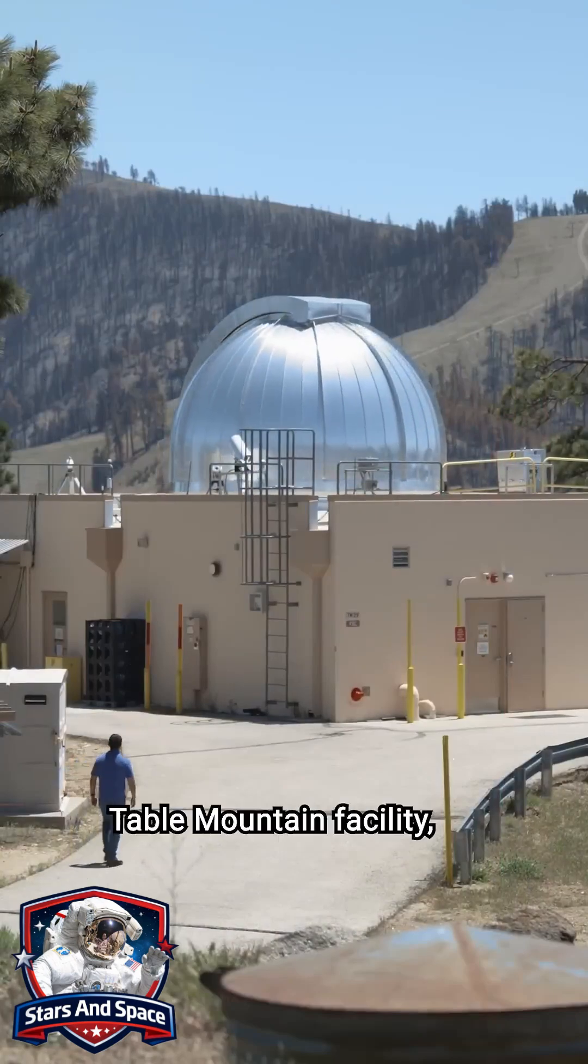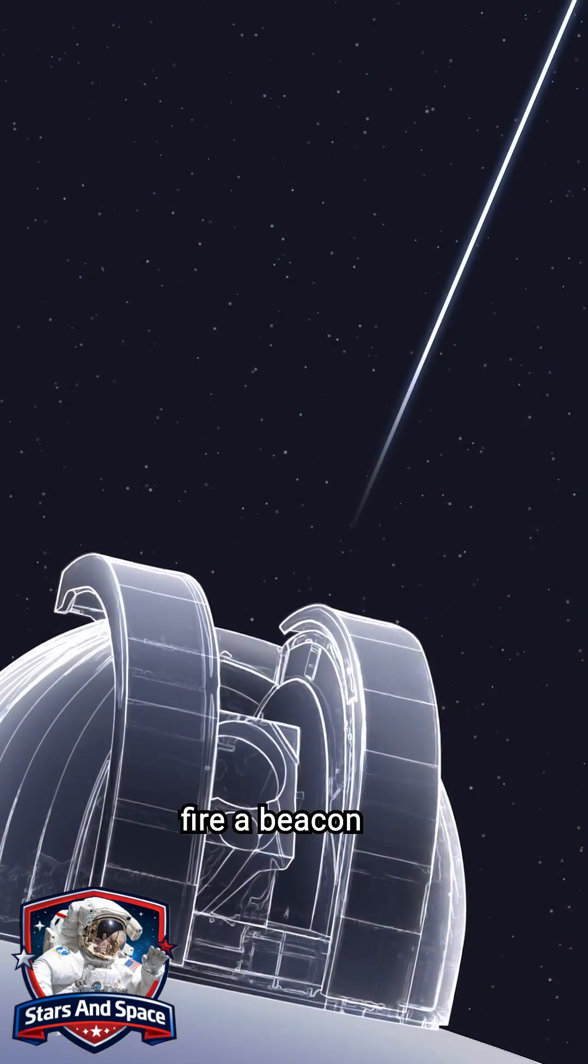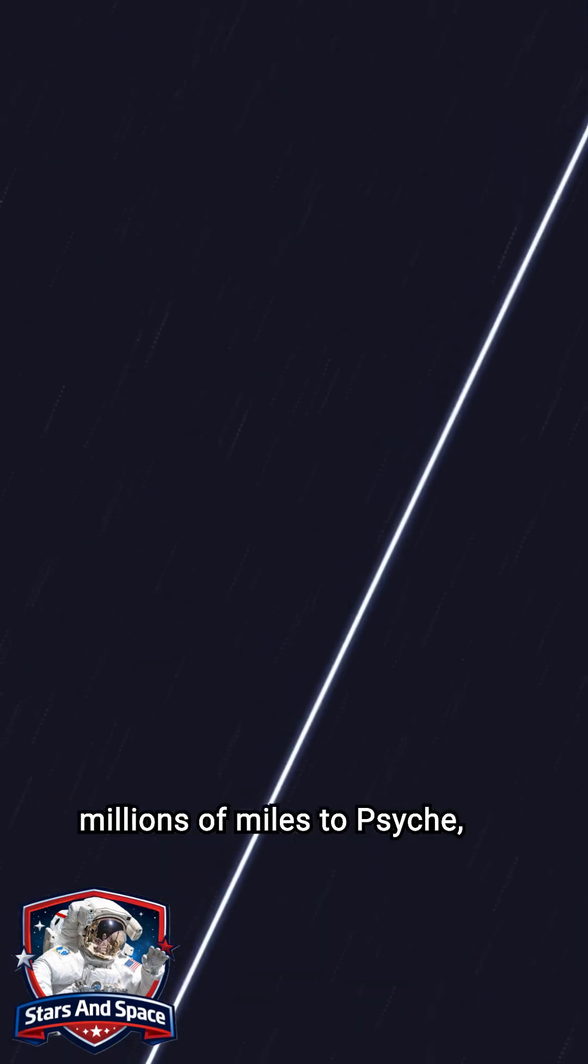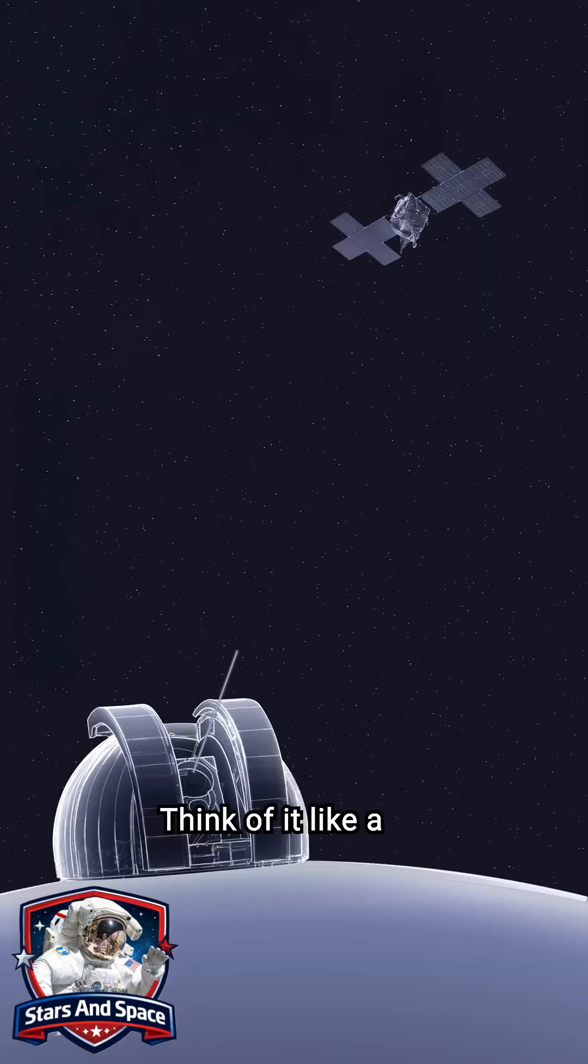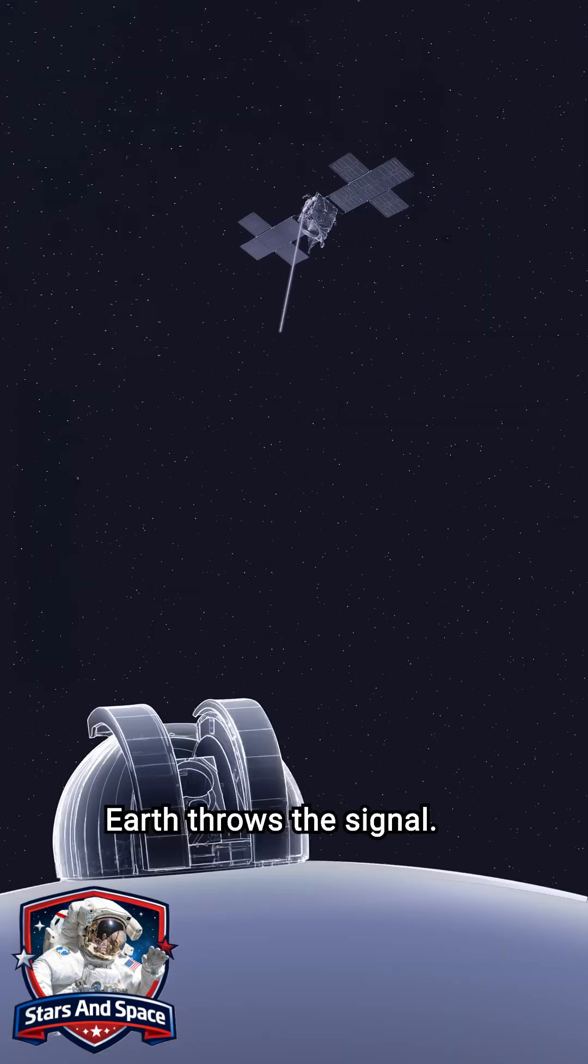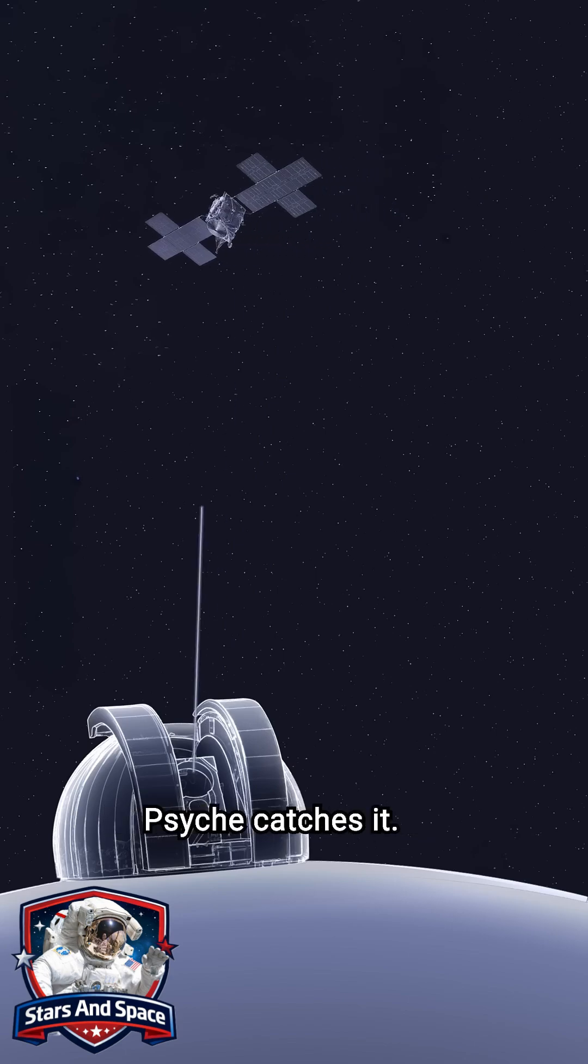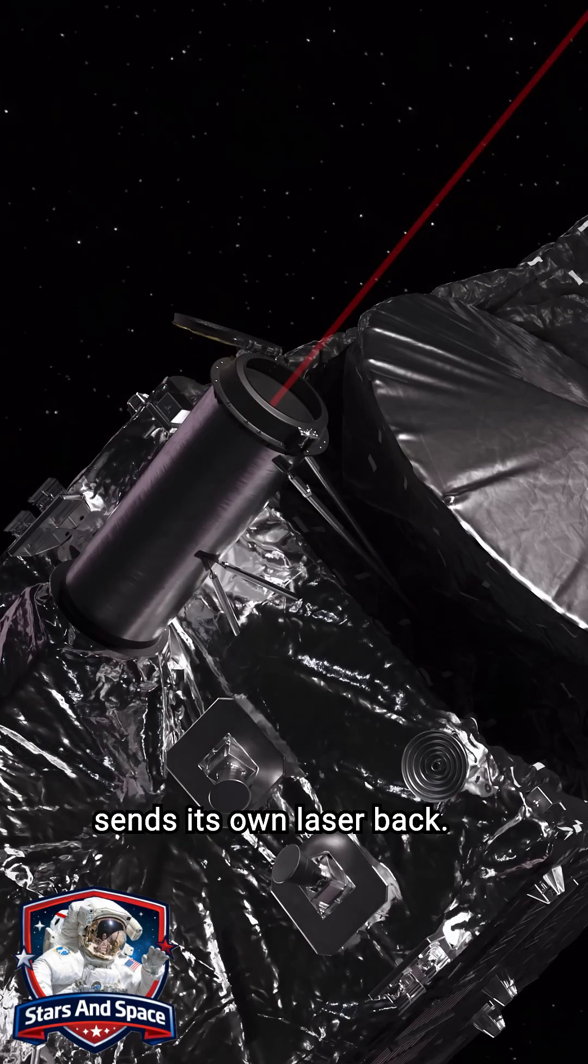At JPL's Table Mountain facility, 10 infrared lasers fire a beacon millions of miles to Psyche, which carries DSOC's flight transceiver. Think of it like a cosmic game of catch. Earth throws the signal, Psyche catches it. Then Psyche sends its own laser back.